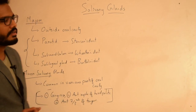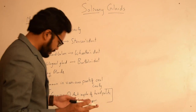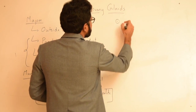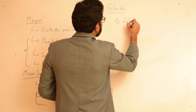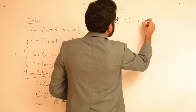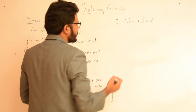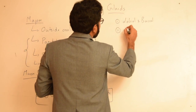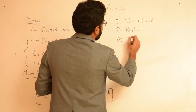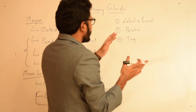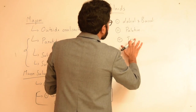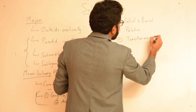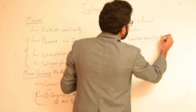Now let's discuss the various minor salivary glands and the nature of fluid being secreted by them. The first minor salivary glands are the labial and buccal glands, present on the labial mucosa as well as buccal mucosa. We also have palatine glands, and certain minor salivary glands are present in the tonsillar area.